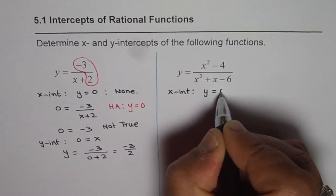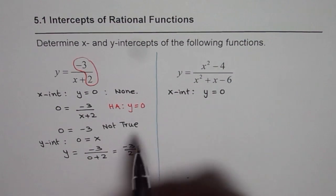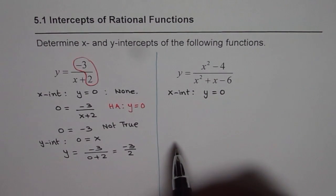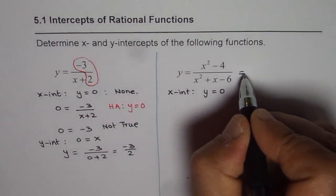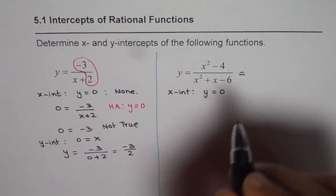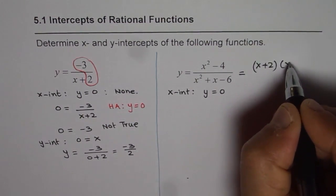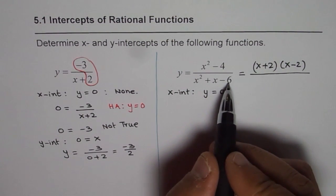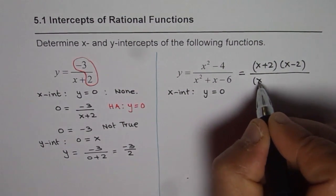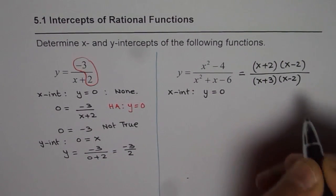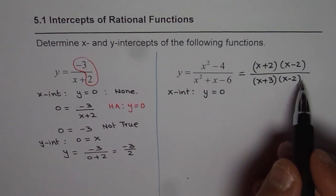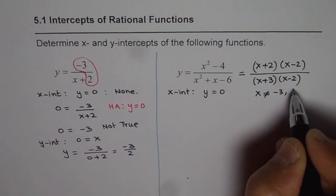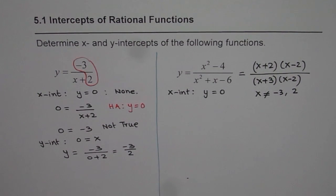For x intercept replace y with 0. That means the numerator should be 0. Before getting into this, it is good practice to write down restrictions of this function. We will write both in factored form. x squared minus 4, I could write as x plus 2 times x minus 2. And denominator, we need product of minus 6 and sum of plus 1, so x plus 3 times x minus 2. That tells us the restrictions: x should not equal minus 3 or plus 2.